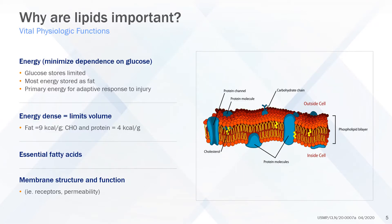Why are lipids important? Lipids are the primary source of energy for the human body. Glucose stores are limited, and so the body must store its energy as lipid or fat. Lipid is energy-dense, supplying nine kcals per gram, compared with carbohydrate, which supplies four kilocalories per gram.